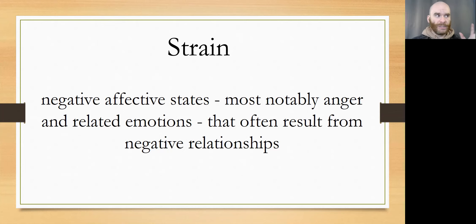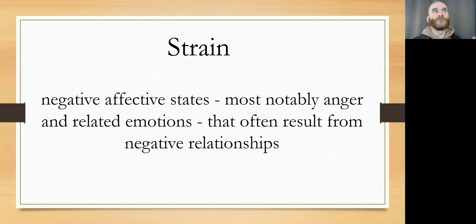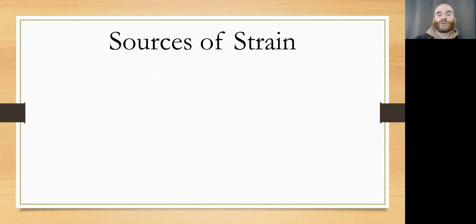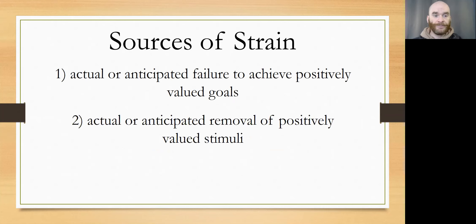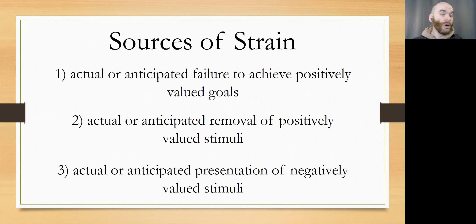So we're moving away from a pure focus on the disconnect between, for instance, cultural goals and institutionalized means, and focusing instead on the emotional state that people experience within the context of relationships that are problematic or somehow negative. Agnew emphasizes three sources of strain — these aren't the only possible sources, but these are the three that he starts his conversation about general strain theory with: the actual or anticipated failure to achieve positively valued goals; actual or anticipated removal of positively valued stimuli; or actual or anticipated presentation of negatively valued stimuli.